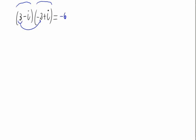So we start: 3 times negative 2, negative 6. 3 times i, 3i. Now we multiply negative i times negative 2, which is 2i. And we multiply negative i times positive i. Positive negative is negative i squared.